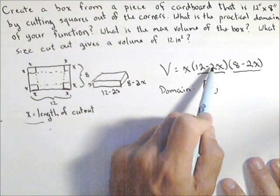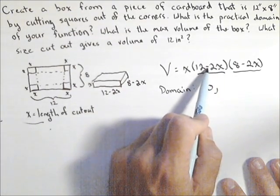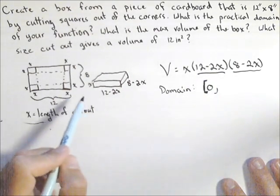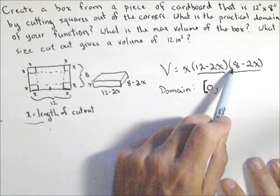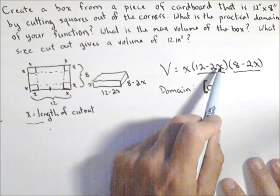Now this part here becomes zero when x is six. In other words, we cut pretty much right in the middle, but like we said, that would give a negative side here, so we can't go as high as six.